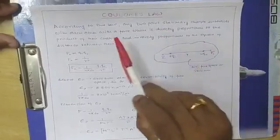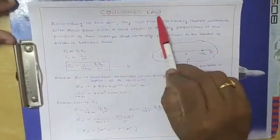Any two charged bodies interact with each other with a force which is directly proportional to the product of their charges and inversely proportional to the square of distance between them — and that is what Coulomb's law is.